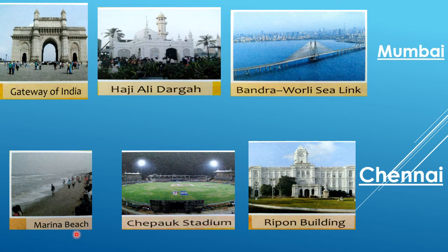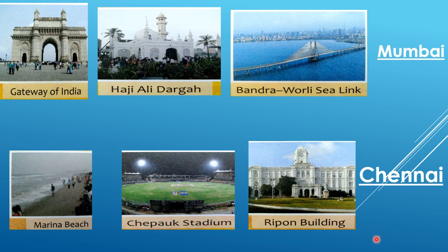Next: Marina Beach, Chepauk Stadium, and Rippon Building. Does anyone know where these famous places are? I'll tell you — all these famous places are in Chennai. Chennai is the capital of Tamil Nadu. Chennai is also very famous for its beaches and is a commercial city. Medical facilities here are also very good. So today we studied India's four metro cities: Kolkata, New Delhi, Mumbai, and Chennai.